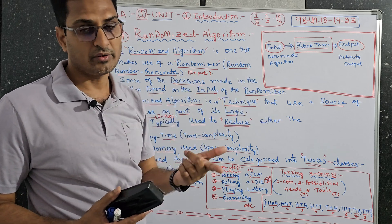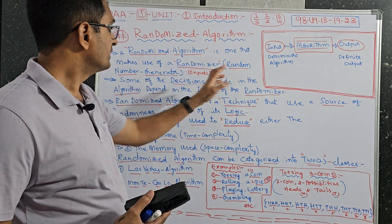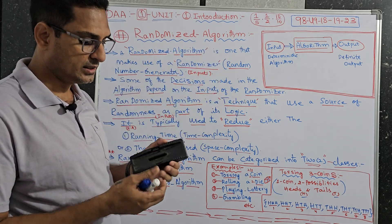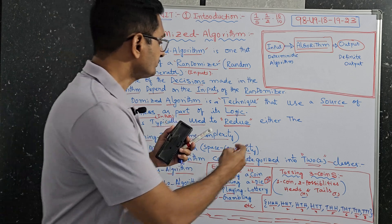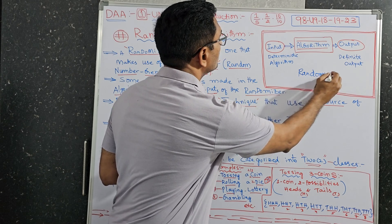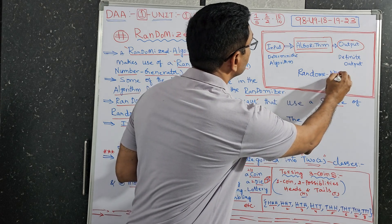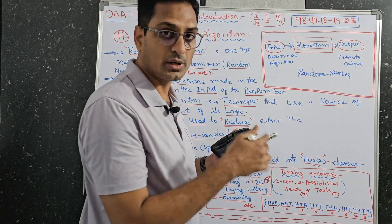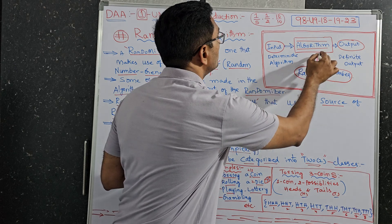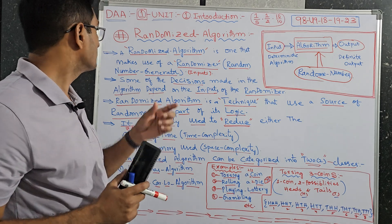If you don't give inputs properly, we will get random output. That is called Non-Deterministic Algorithm. You can watch my fifth unit, NP-hard and NP-complete. This is just a deterministic algorithm. But here it is randomized algorithm with random numbers. So this deterministic algorithm will become as randomized algorithm.